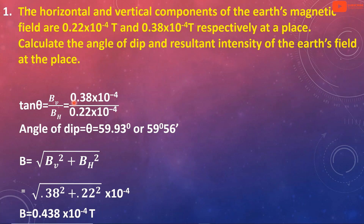Bv is equal to 0.38×10⁻⁴ tesla and Bh is equal to 0.22×10⁻⁴ tesla. Therefore, tan theta equals 0.38×10⁻⁴ divided by 0.22×10⁻⁴. The angle of dip theta comes out to be 59.93 degrees.